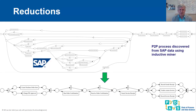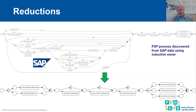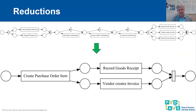We all know the possibility to reduce a larger Petri net into a smaller Petri net in such a way that certain properties are being preserved. Here you see a model that was discovered using process mining, using the inductive miner based on SAP data. It is easy to generate process models that have hundreds or thousands of different transitions and places. Through reductions or reduction rules, we can make them smaller — here I show a reduction where we end up with a process model with four transitions at the end.